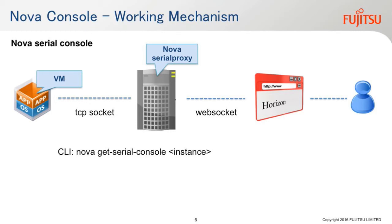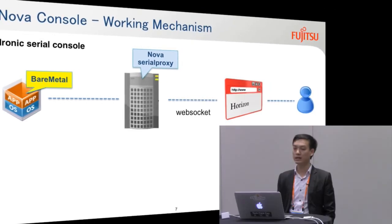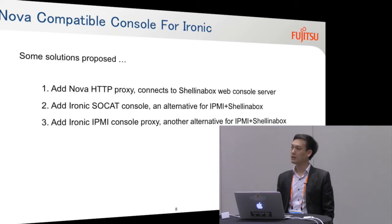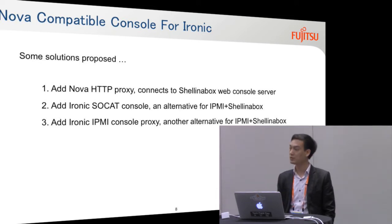To overcome the situation, I want to explain the overview of the working mechanism for the current NOVA shell console. The operator or user can use the NOVA shell proxy. The NOVA shell proxy is currently acting as a bridge between the virtual machine and the NOVA shell console. Currently, the NOVA shell console cannot connect to bare metal, meaning the operator has to use the web browser to access the bare metal. To overcome this, we have some proposed solutions: first, try to add a NOVA HTTP proxy connecting to the shell-in-a-box web console server; or, try to propose the Ironic serial console as an alternative for IPMI shell-in-a-box.